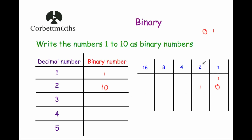The number 3: we're not going to use a 4, so we use a 2 and a 1, giving us 1 and 1 — so 11 in binary is 3. The number 4: we put a 1 in the 4s column and then 0 and 0, because we've got a 4 and we don't need any 2s or 1s. So 100 in binary is the number 4.